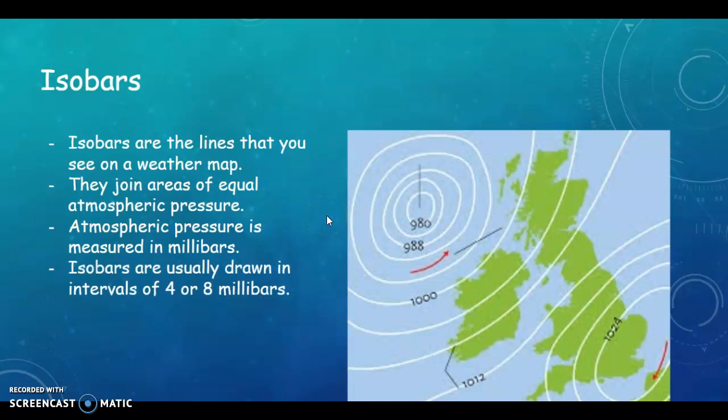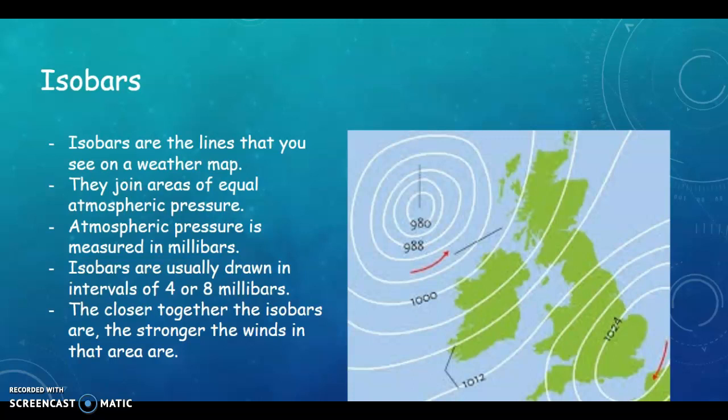And isobars are drawn in intervals of four or eight millibars. The closer together they are, the stronger the winds in that area. So here with our low we will have swift breezes, not terribly strong, but much stronger than what we would have down here.